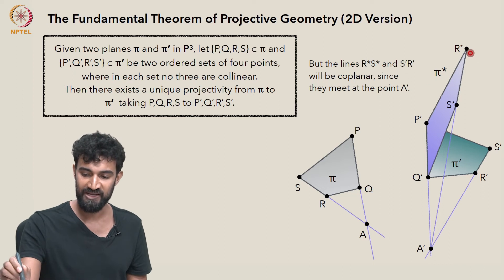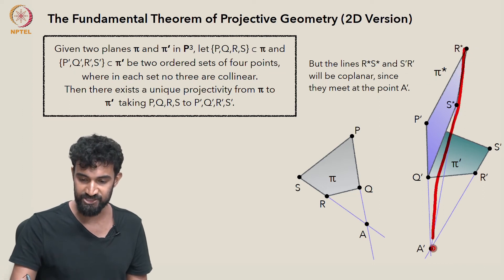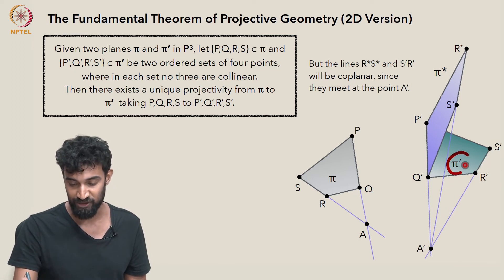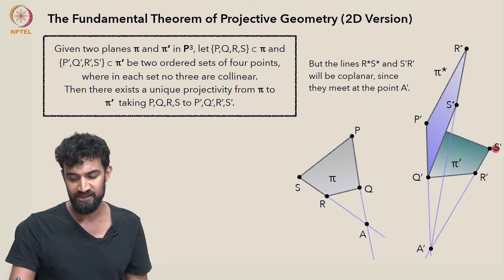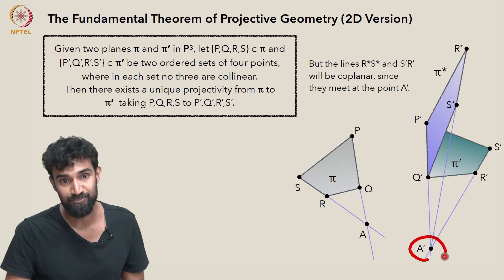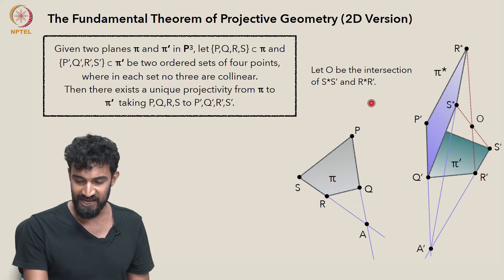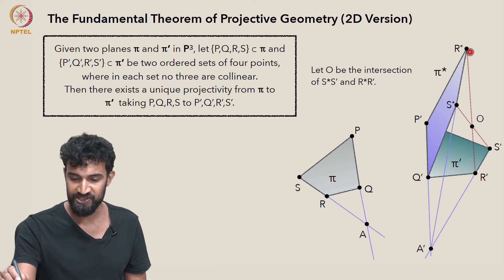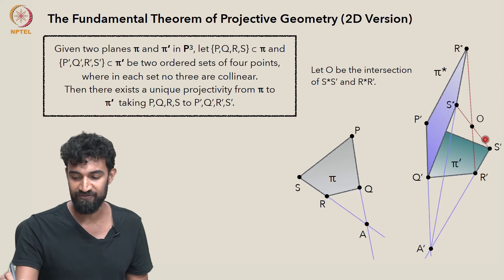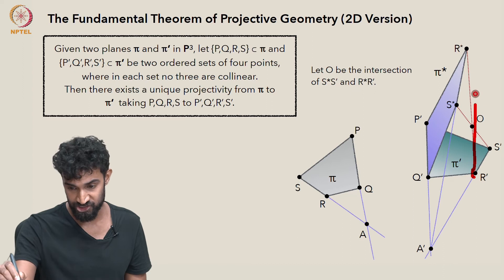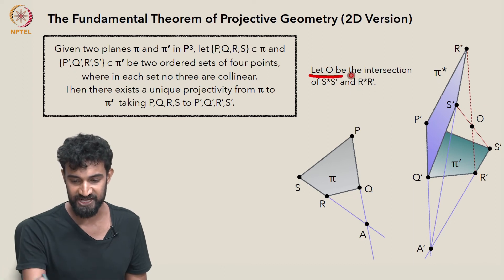But the thing to notice here is that R star, S star, and S prime R prime—this S prime R prime is a line in the plane π prime—they're going to be co-planar because they share a point A prime. As a result, we can look at the intersection of S prime S star and R prime R star. Let's call that intersection O.